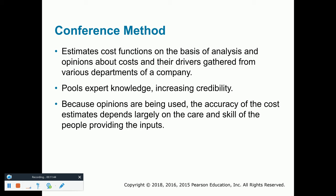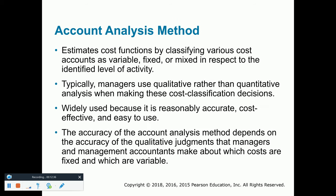The second method is typically called the conference method. The conference method basically estimates costs on the basis of analysis and opinions about costs and their drivers. For example, you gather all departments together to try to come up with cost estimates. This rug company may gather opinions from different supervisors, production engineers, and other groups combined to develop cost estimates. The accuracy may not necessarily be there — it depends on the skill of the people providing the inputs — so this may not be the best method to use.